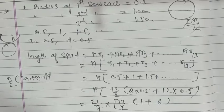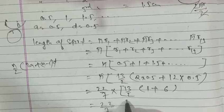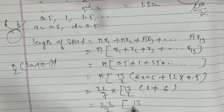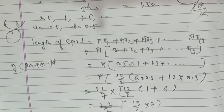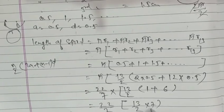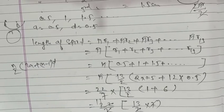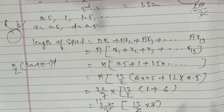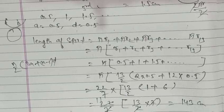So it becomes 22 upon 7, bracket 13 upon 2, 6 plus 1 becomes 7. It becomes 1, 1, 1, 7 with 7 cancels, 13 into 11, 13 into 11 will be 143 cm.